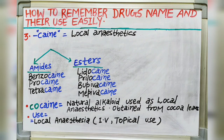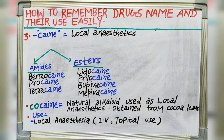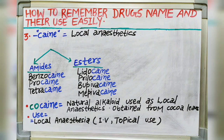Some natural alkaloids like cocaine are also used as local anesthetics. Cocaine is obtained from coca leaves and is also used as a local anesthetic given intravenously or for topical use. It belongs to local anesthetics.